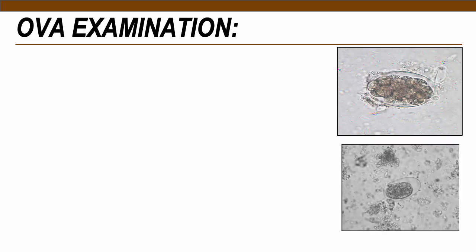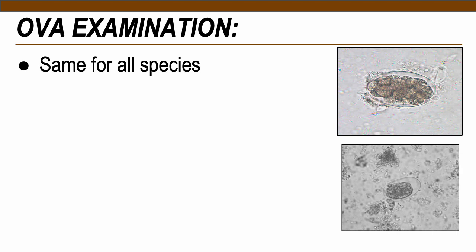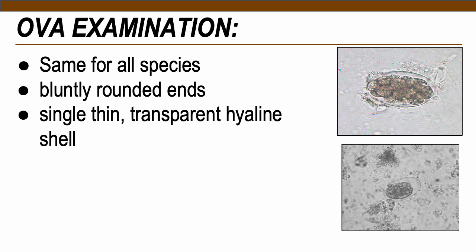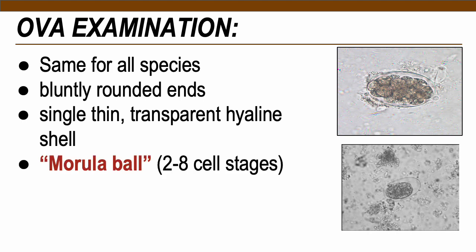Hookworm ova morphology is the same for all species — indistinguishable between Necator and Ancylostoma. They have bluntly rounded ends with a single thin transparent hyaline shell. Inside the shell is a morula ball containing 2–8 cell stages representing the developing embryo; the higher the cell stage, the more mature the egg.